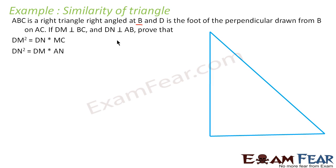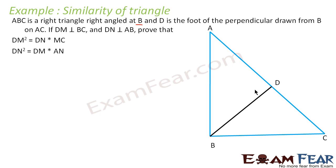Let's draw the triangle. This is the right triangle with right angle at B. D is the foot of the perpendicular drawn from B on AC, so we draw this point D on AC from B. Also, DM is perpendicular to BC, so let's draw a perpendicular line here.